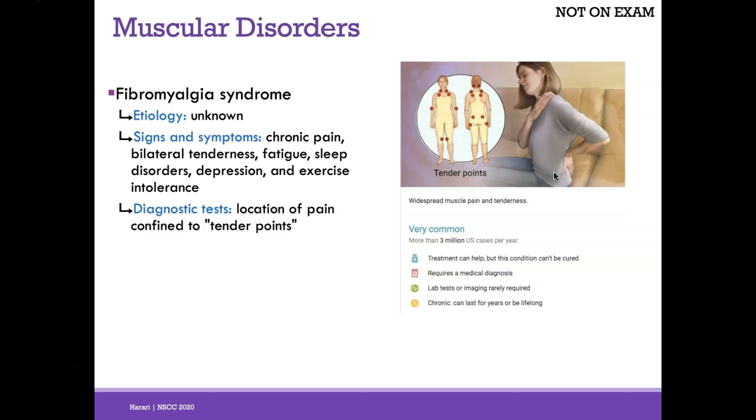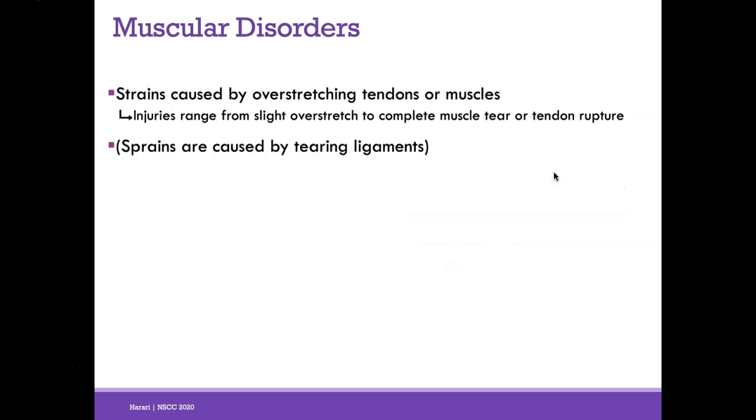Here's another example of a muscular disorder: fibromyalgia, and a little about strains and sprains. That's the end of chapter 11.